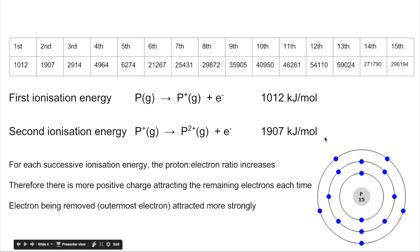The second ionization energy, so let's say that's gone, we're removing this electron now, that requires slightly more energy, 1907 kilojoules per mole. And then the third one a little bit more and so on.